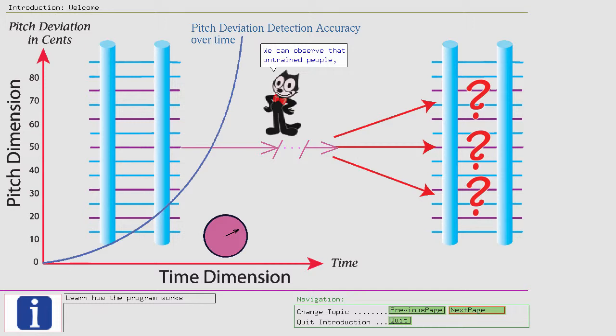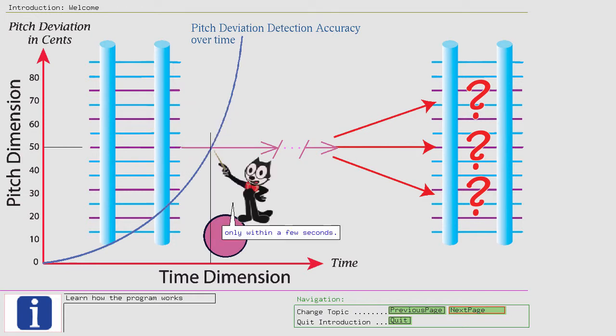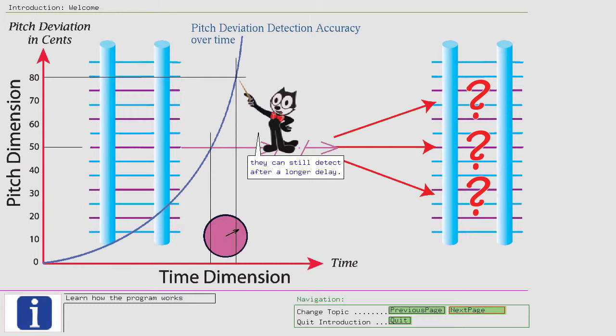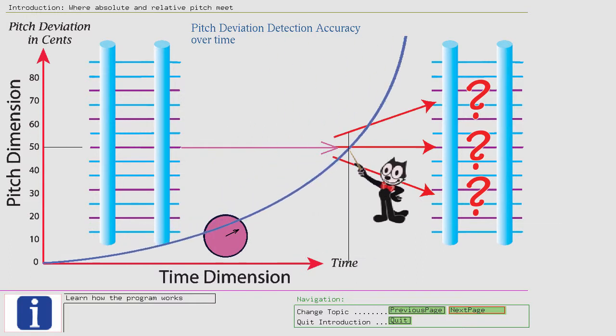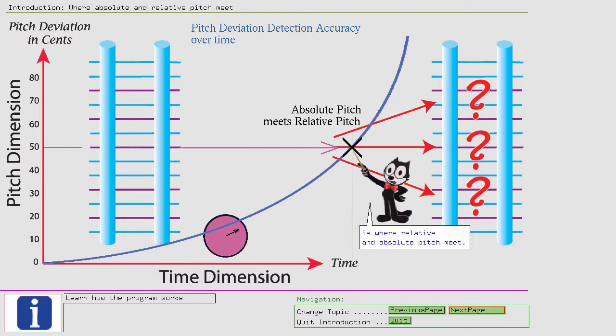We can observe that untrained people can answer the pitch dimension with the precision of 50 cents only within a few seconds. Larger deviations they can still detect after a longer delay. Fortunately, with training, you can increase the time of pitch retention for deviations of 50 cents too. The point in time where your memory falls just short of identifying the pitch dimension accurately for the second sound is where relative and absolute pitch meet.